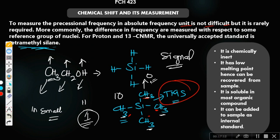If a proton in your compound has a particular frequency, you subtract that frequency from that of TMS to get the chemical shift. TMS is assigned δ = 0, so all other shifts are reported relative to TMS. Whether the question is about proton NMR or carbon-13 NMR, the standard used is TMS — tetramethylsilane.